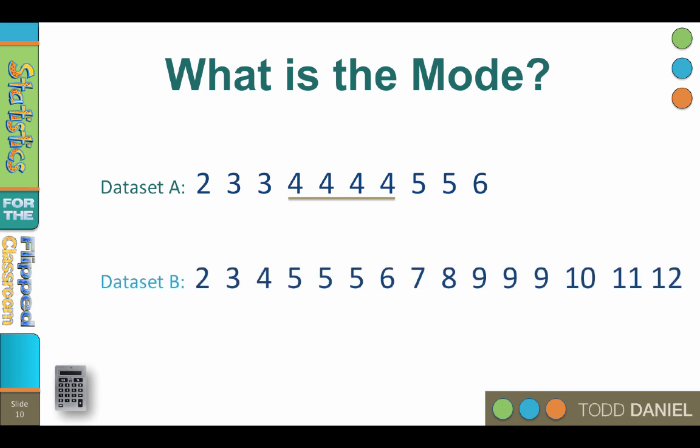Now look at data set B. What is the mode? You'll see there are actually two most frequently occurring scores: five and nine. So this is a bimodal distribution with modes at five and nine. Incidentally, when you get the mode in SPSS and the distribution is bimodal, SPSS will tell you the smallest mode — in this case five — and then give you a warning that multiple modes exist.